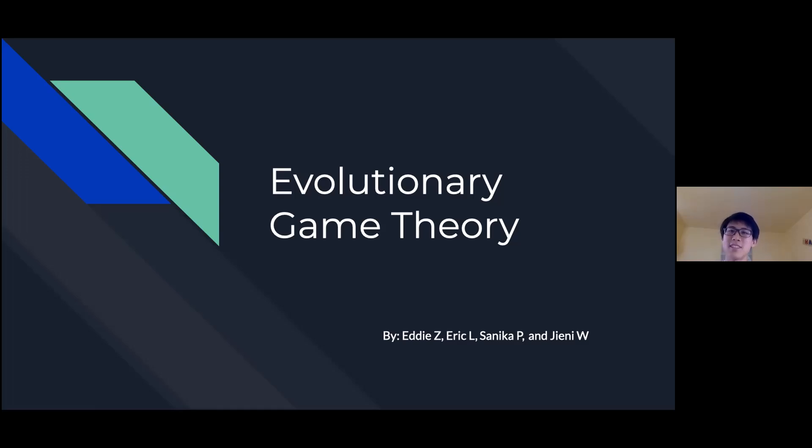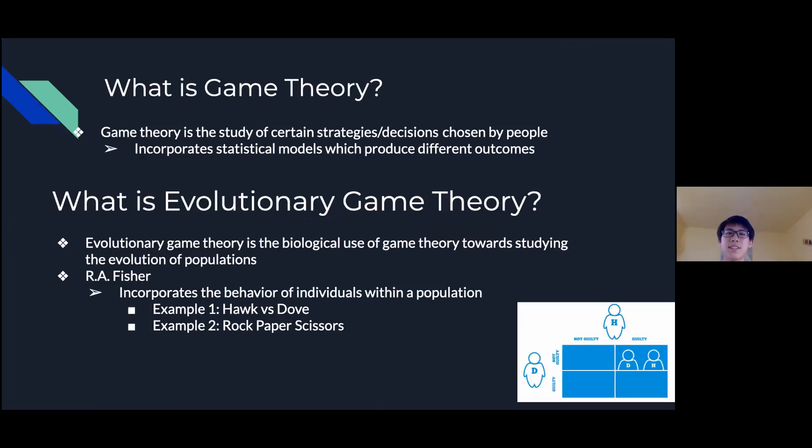My name is Eddie Zhang and I'm here with Eric Biasanaka Patil and Johnny Wu, and today we'll be presenting evolutionary game theory. So what is game theory first of all? Game theory is the study of certain strategies and decisions chosen by people and it incorporates statistical models which can produce different outcomes. Evolutionary game theory is the biological use of game theory and it is used to study evolution of populations and the behavior of respective populations. It was introduced by R.A. Fisher.